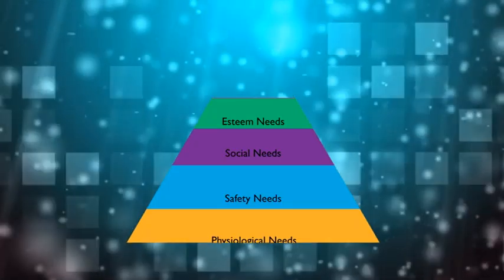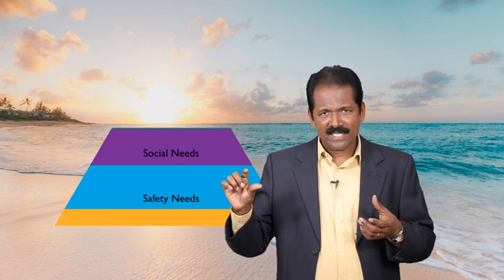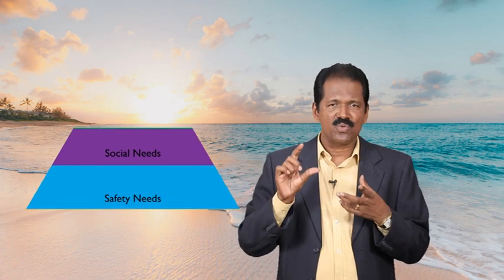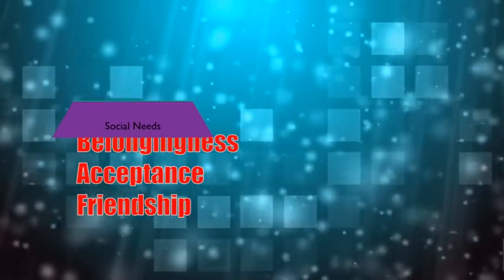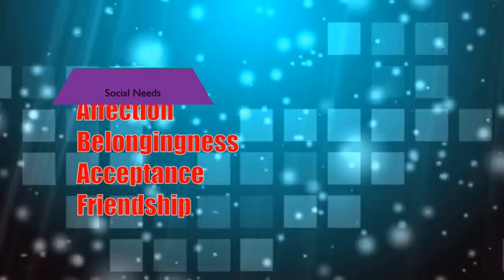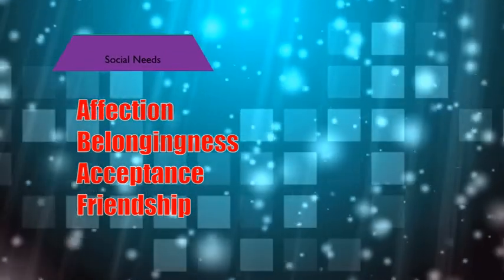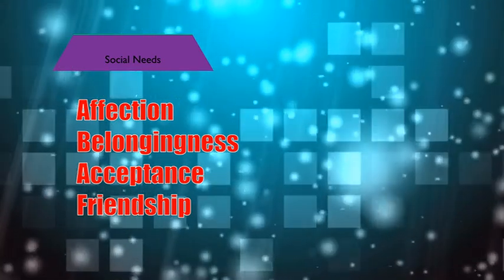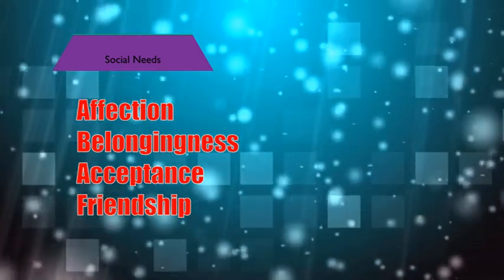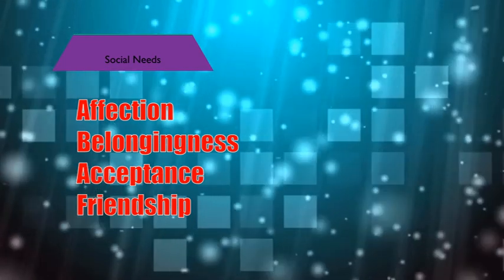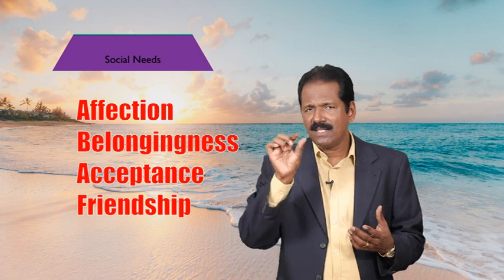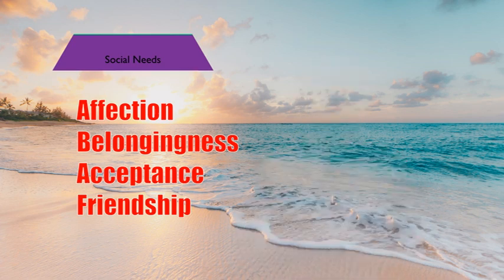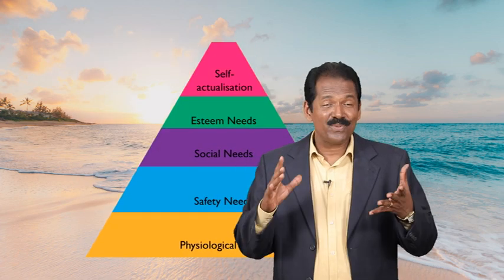The third one is social needs. Once we gain the first two — physiological needs and safety — then comes the third one: social needs. Social needs include affection, belongingness, acceptance, and friendship. The feelings of belongingness — for example, friendship, intimacy, trust, acceptance, and receiving and giving affection and love — all come under the third level, that is social needs.